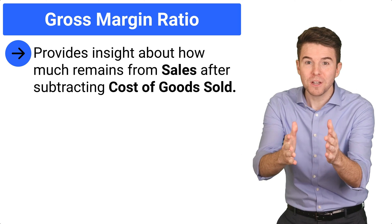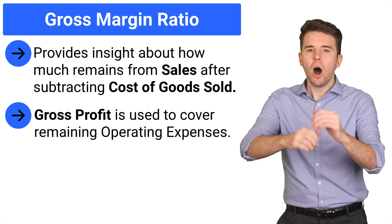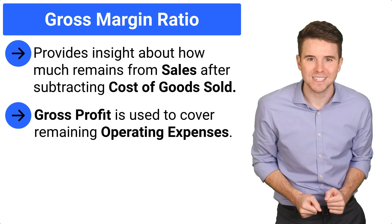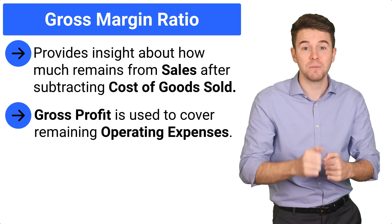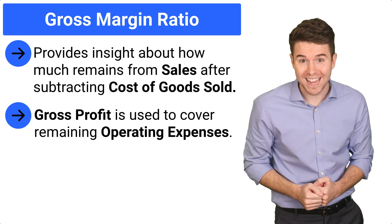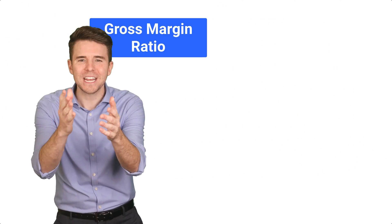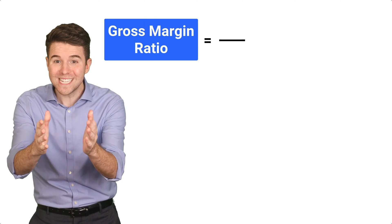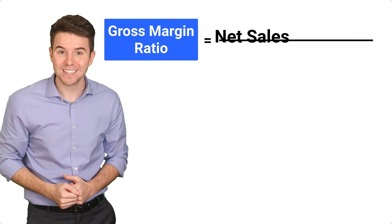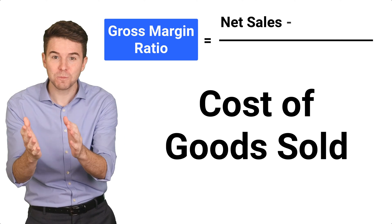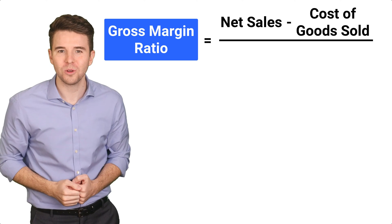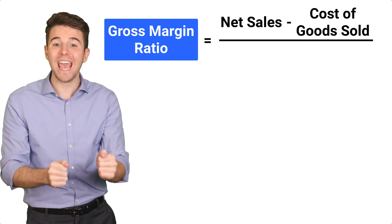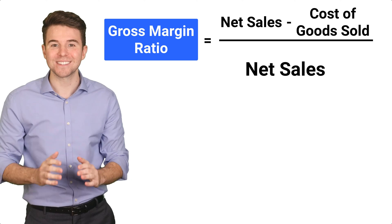This is important because what remains is used to pay all other operating expenses and hopefully have some leftover for net income. To calculate gross margin ratio, we take net sales and subtract cost of goods sold and then divide that by net sales.